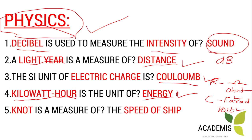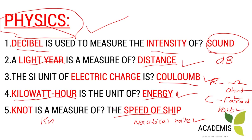A knot is a measure of the speed of a ship. K-N-O-T — knot. It is the unit used to measure a ship's speed. One knot equals one nautical mile per hour. So 'knot' is the unit of speed for ships, equal to one nautical mile per hour.